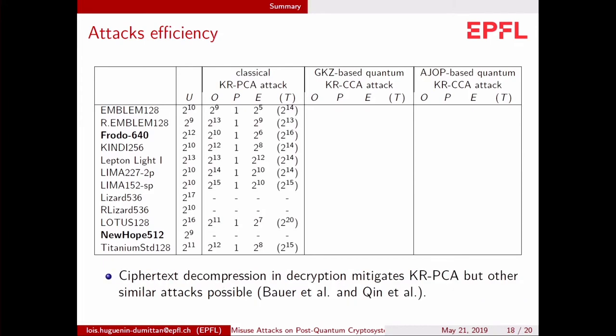Here are the results for the classical attack. First, we see that there is no result for Lizard and New Hope. The reason is that they use some decompression function at decryption. So it means that the components are multiplied before the decryption. And that mitigates our attack because we lose the fine-grained control we had over this value x. But other attacks are still possible, as shown by Bauer et al. and Qin et al. in some recent papers, where they can recover the secret key with good probability with a few thousand queries.